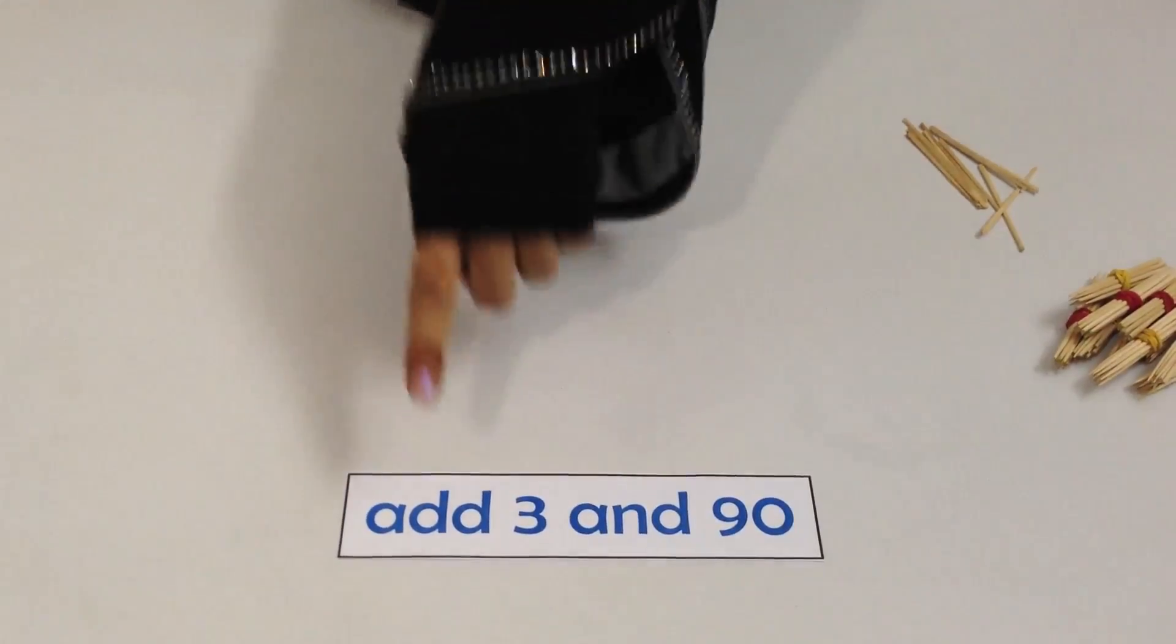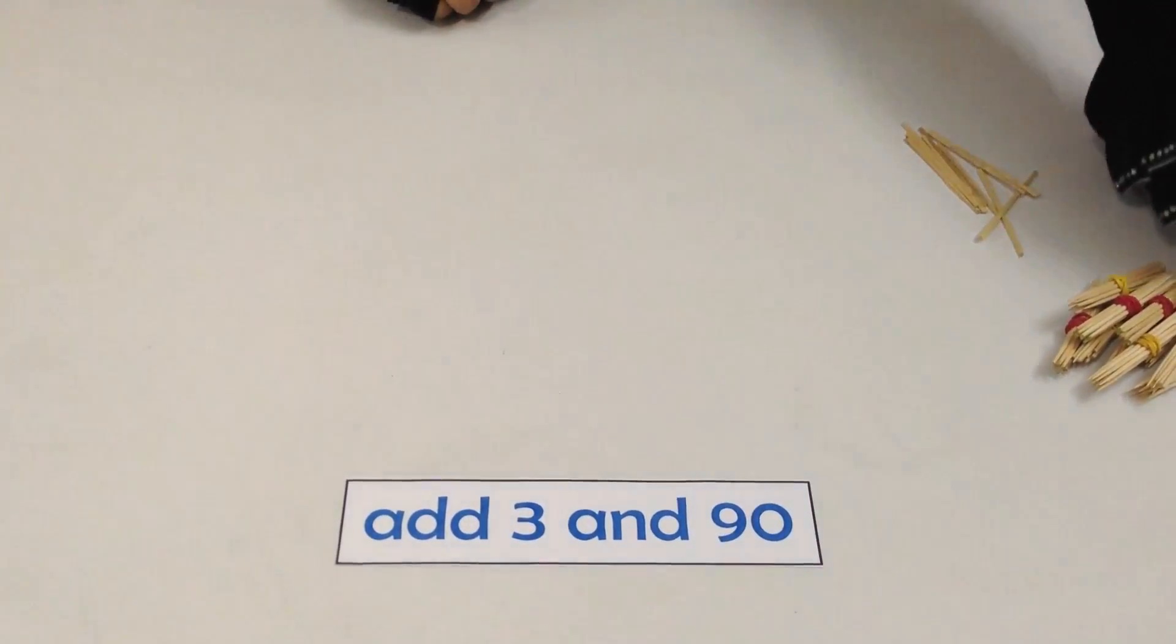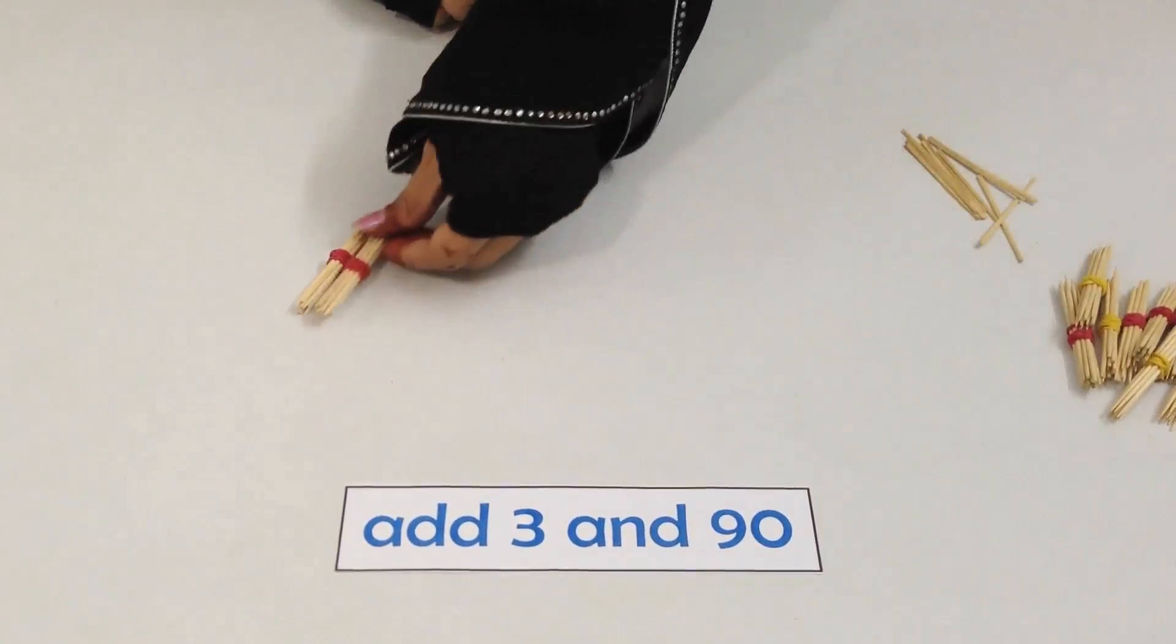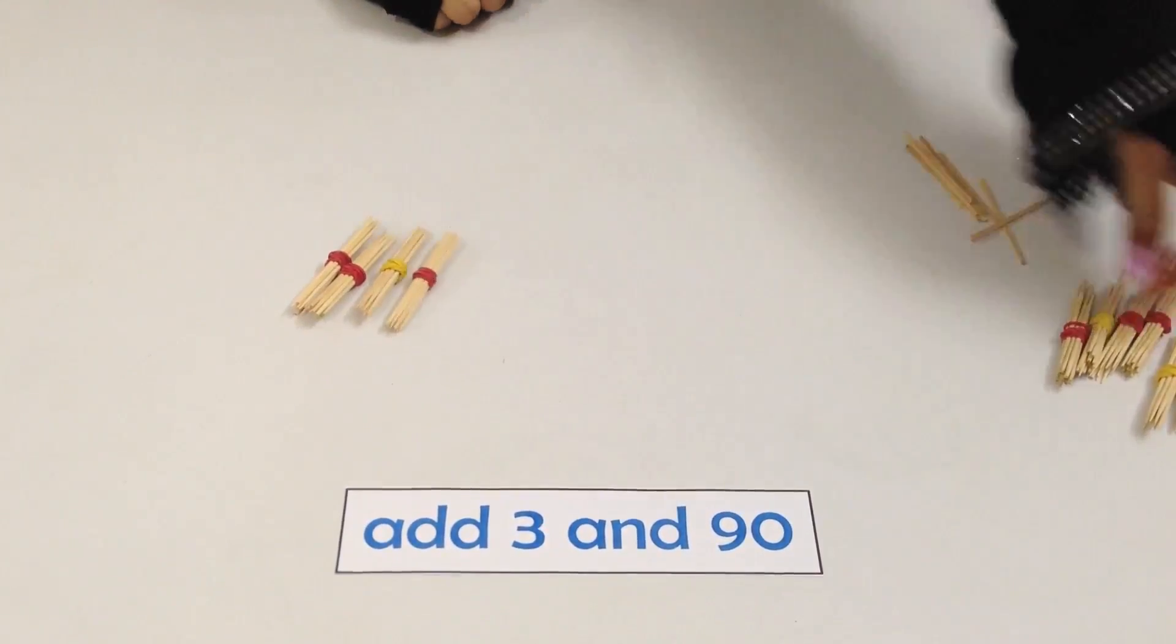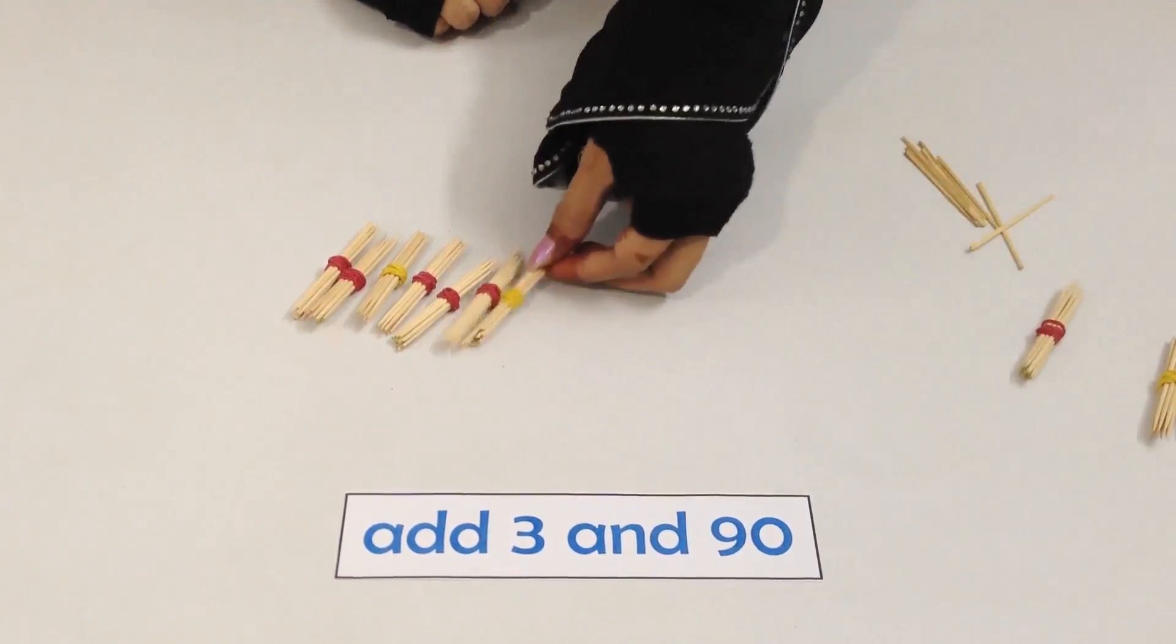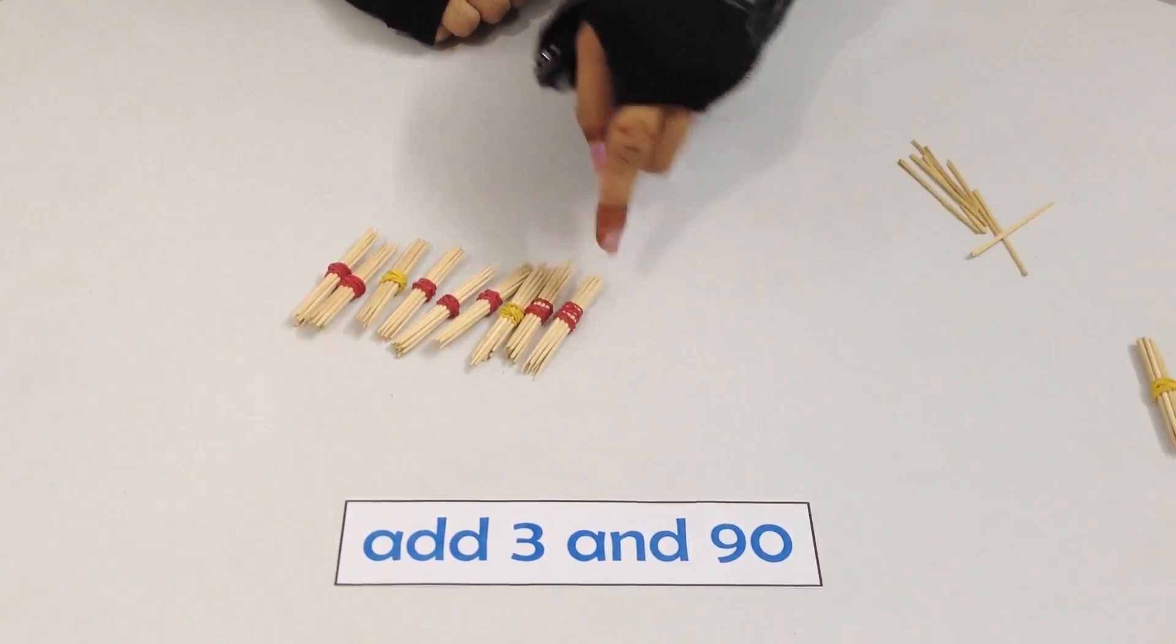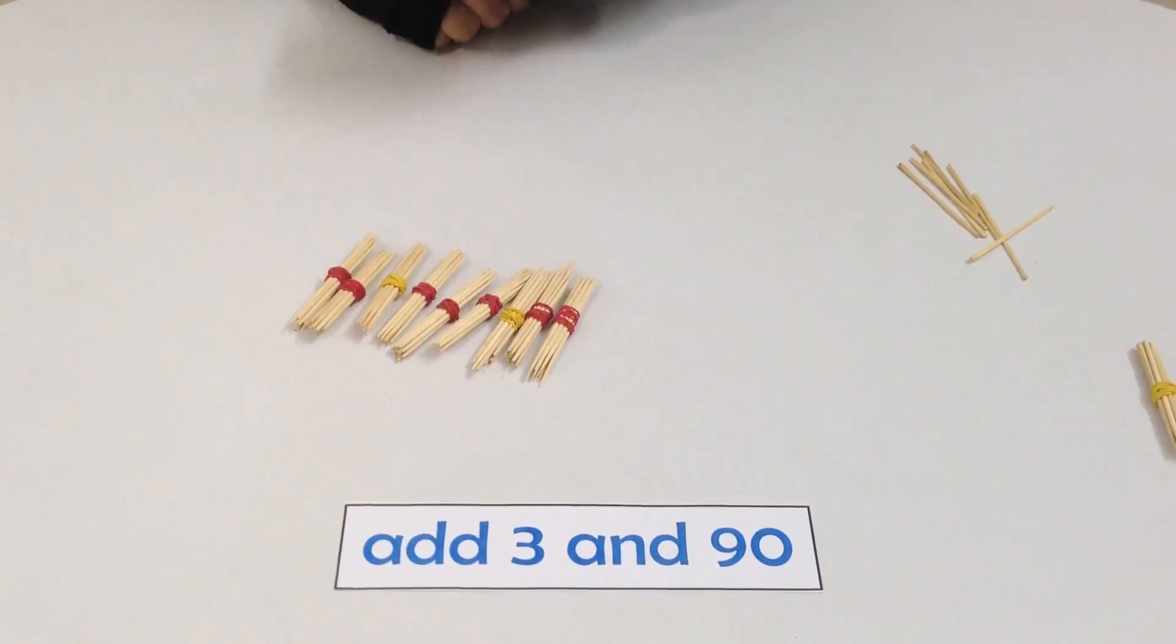We are now going to add three and 90. For that, we are going to take nine tens: 10, 20, 30, 40, 50, 60, 70, 80, and 90. Each bundle has 10 sticks, so we have 90 here.